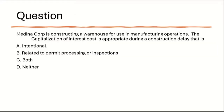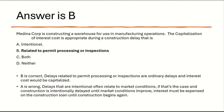Let's try this. Medina Corp is constructing a warehouse for use in manufacturing. The capitalization of interest cost is appropriate during a construction delay that is: A) intentional, B) related to permit processing or inspection, C) both, D) neither. The answer is B — related to permit processing or inspections — because those are ordinary delays, and interest costs would be capitalized during an ordinary delay.